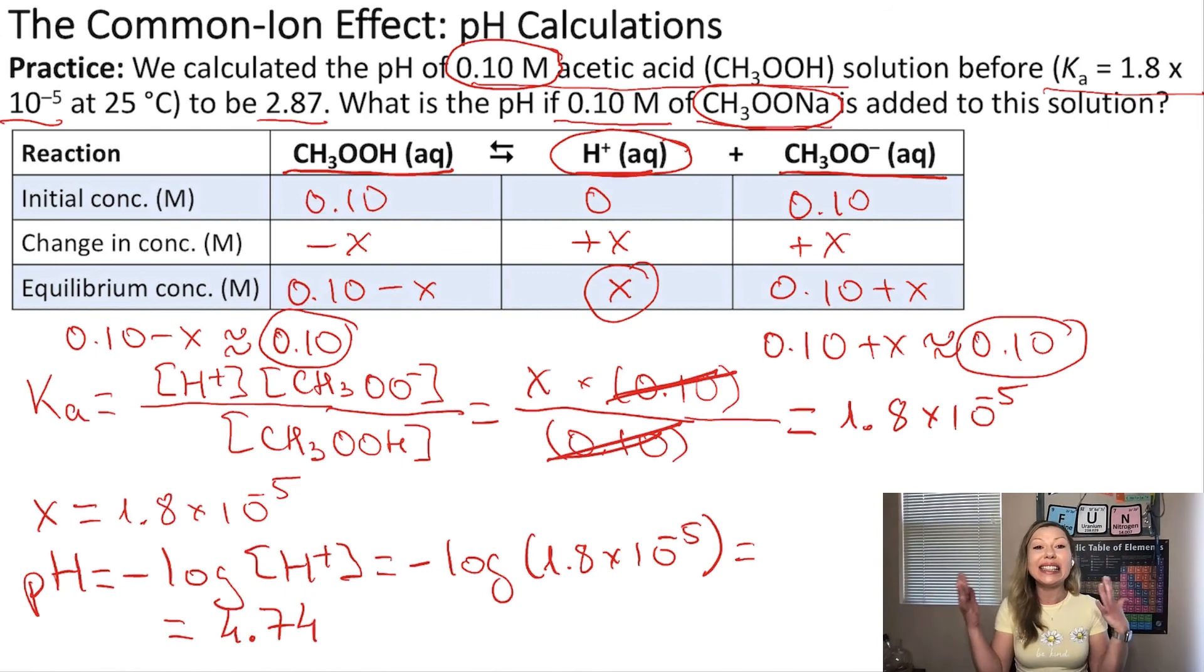And this makes sense. This is exactly what we expected. If we have a 0.10 M acetic acid solution, we have a pH of 2.87. When we add a common ion, in this case the acetate ion, due to Le Chatelier's principle, our equilibrium will shift towards the reactants to the left. So our pH will become less acidic. In this case, it's going to become 4.74. All right, I hope this makes sense. See you in the next video.